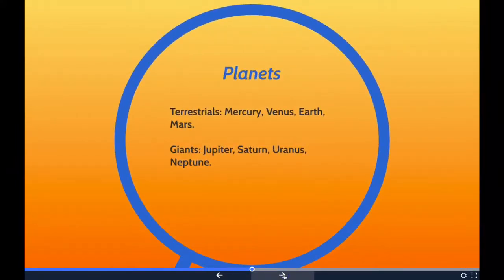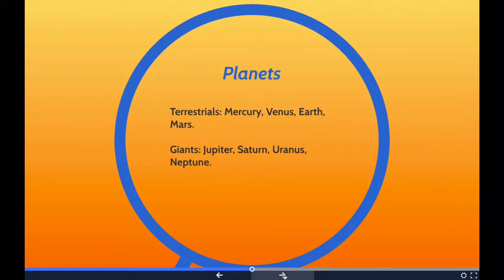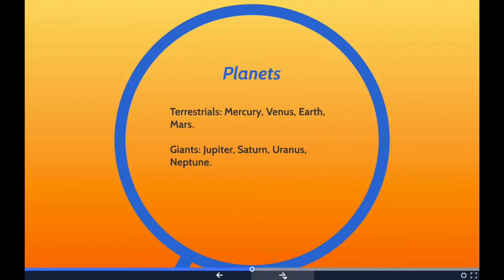Planets are generally divided into two main types: large, low-density giant planets and smaller, rocky terrestrials. There are eight planets in the solar system. In order of increasing distance from the sun, the four terrestrials are Mercury, Venus, Earth, and Mars. Then the four giant planets are Jupiter, Saturn, Uranus, and Neptune. Jupiter and Saturn are known as the gas giants, while Uranus and Neptune are known as the ice giants.